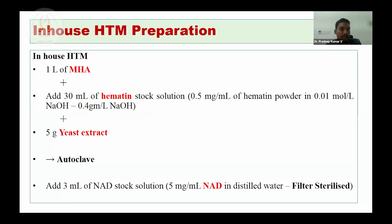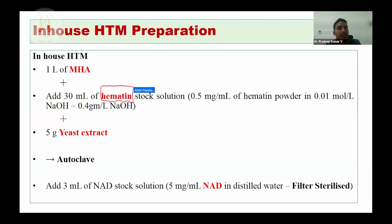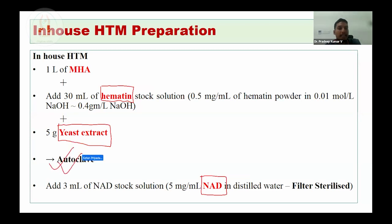For in-house HTM preparation: for one liter of Mueller-Hinton agar, add 30 mL of hematin stock solution. The stock solution is prepared by mixing 0.5 mg per mL hematin powder in 0.01 mol per liter NaOH — approximately 0.4 g per liter of NaOH. Add 5 g of yeast extract and autoclave this entire mixture. After this, add NAD stock solution — 5 mg per liter NAD in distilled water. Note: NAD is heat-labile.